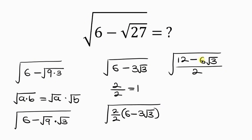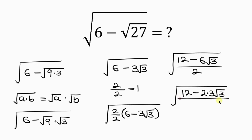Our next step will be for us to split this 6. We use 2, which is a factor of 6, to multiply a number to give 6, and we know that 2 times 3 is 6. So this can be simplified into 12 minus 2 times 6, minus 2 times 6 root 3, all over the denominator 2.